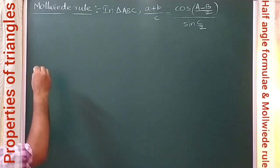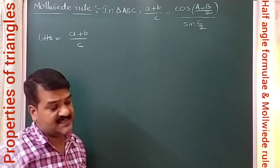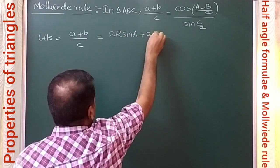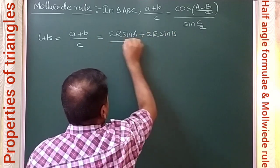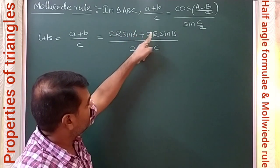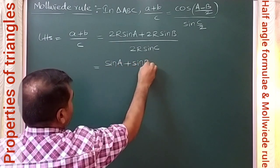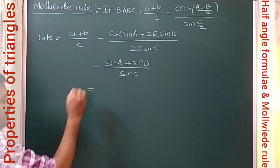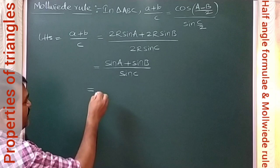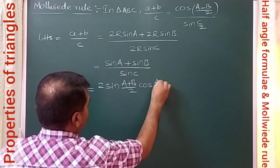Let us take the LHS: (a + b) / c. Using the sine rule, a = 2R sin A, b = 2R sin B, c = 2R sin C. So we get (2R sin A + 2R sin B) / (2R sin C). Taking 2R common in the numerator and cancelling with the denominator, we are left with (sin A + sin B) / sin C. Applying the sum-to-product formula, sin A + sin B = 2 sin((A+B)/2) cos((A−B)/2).